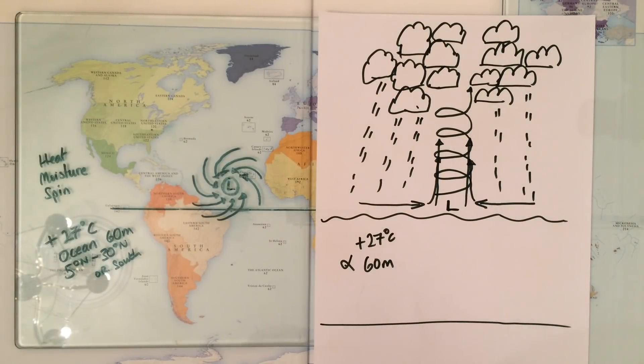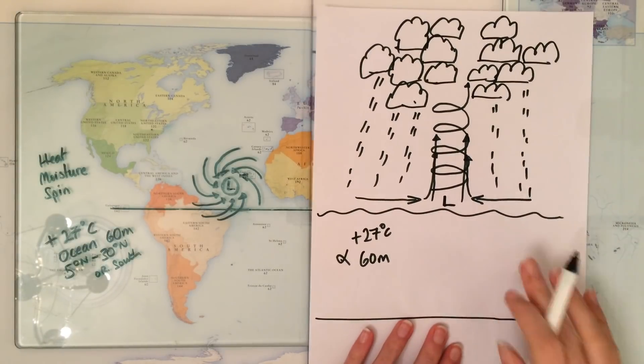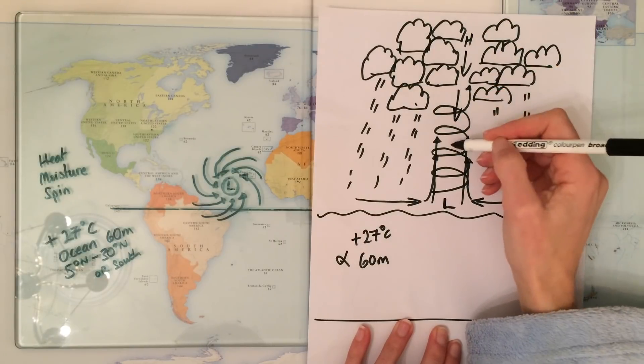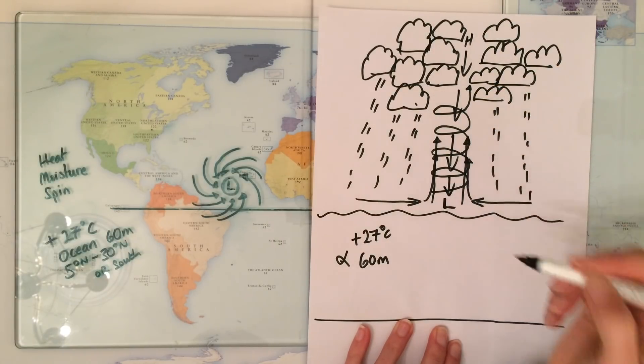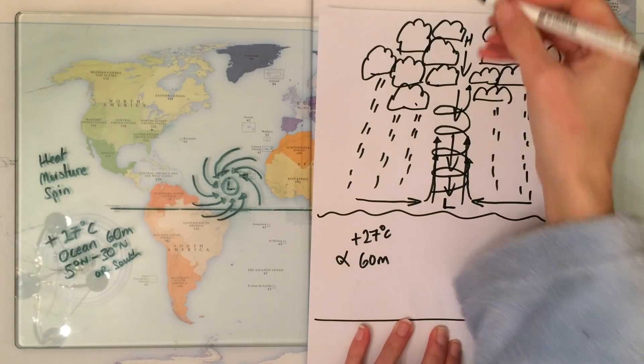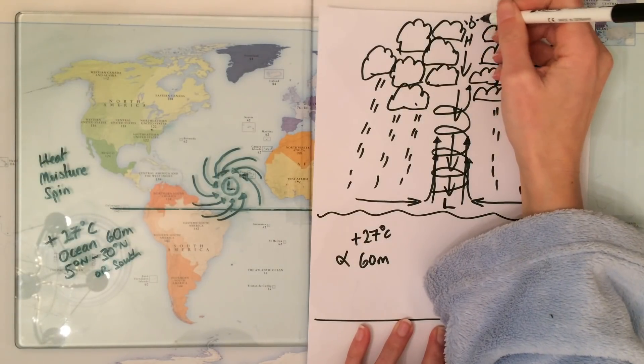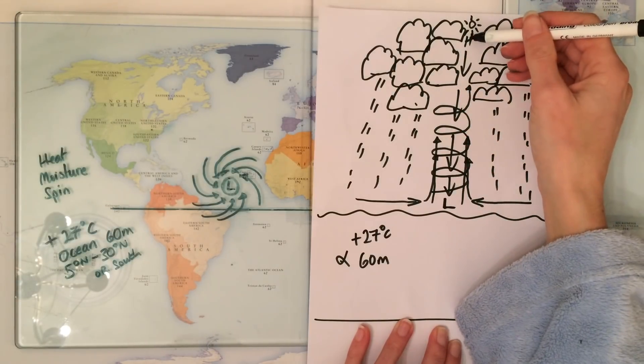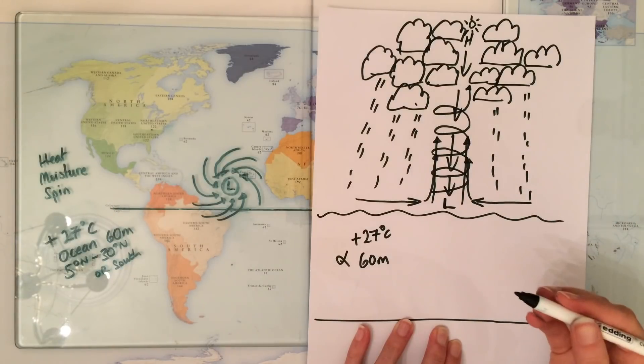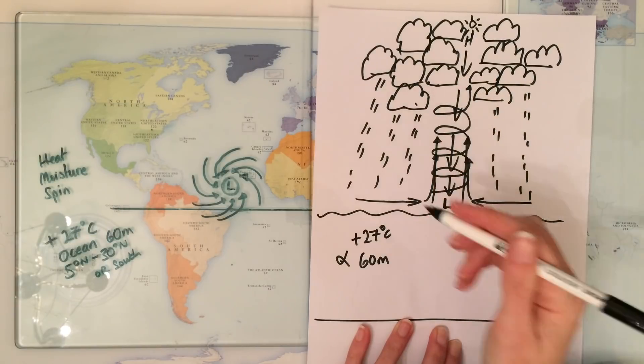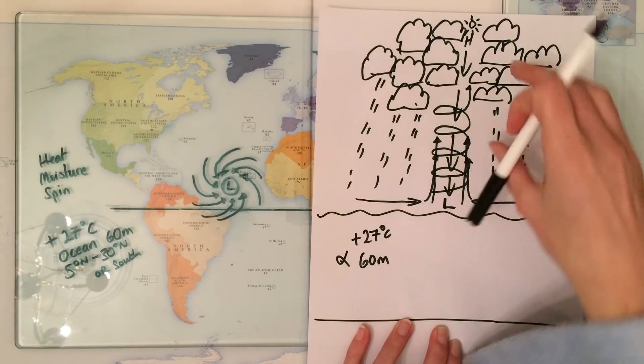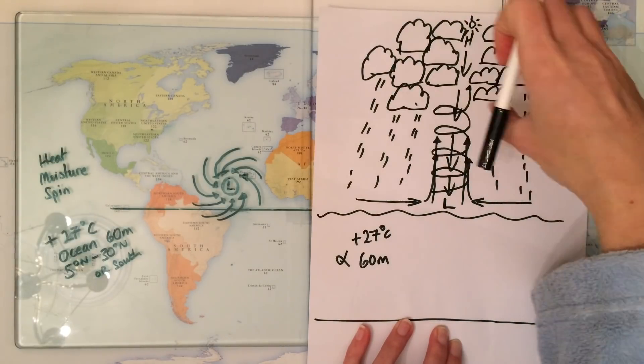The final thing to say is in the middle of the storm we end up with slightly higher pressure and air therefore sinking. That sinking air creates a clear sky because the opposite has happened. Rising air cools and condenses to form clouds; falling or sinking air evaporates to create clear conditions. So in the middle of the storm here, we end up with a nice clear calm eye, as it's called, surrounded by lots and lots of cloud.